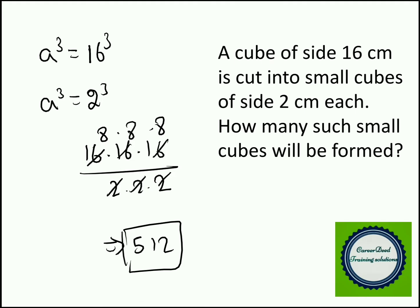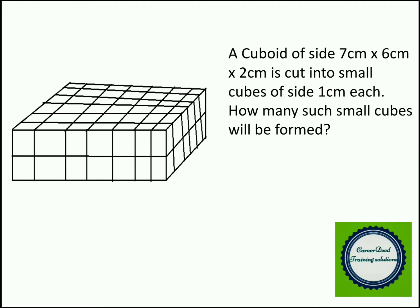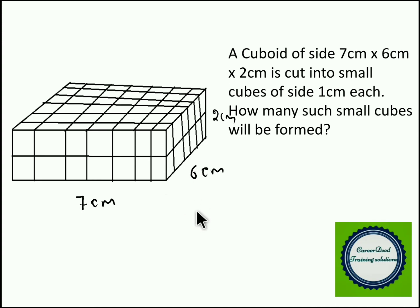Moving to question number three. A cuboid of dimensions 7 centimeters × 6 centimeters × 2 centimeters is cut into small cubes of size 1 centimeter each. How many such small cubes will be formed? Here you are cutting a cuboid into cubes. The dimensions are 7 × 6 × 2, which is length × breadth × height. In a cube all sides are equal so volume is A³, but here all sides are different so volume is length × breadth × height.